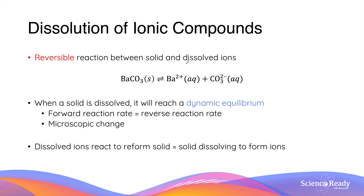This equation shows you an example of how you can use chemical equations to represent the dissolution of an ionic compound. Barium carbonate, which is an ionic compound, exists in a solid form, but when it is dissolved in water, it can dissociate to produce two ions — barium ion and carbonate ion — both of which will be in aqueous states. This reaction is a reversible one.